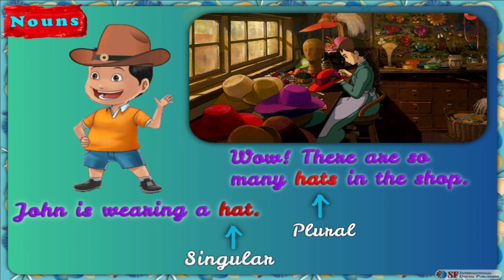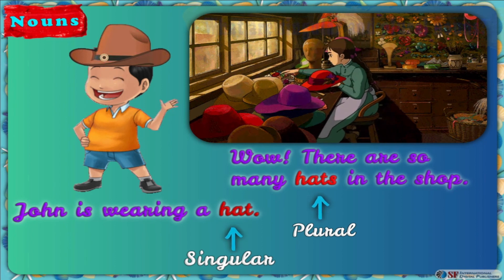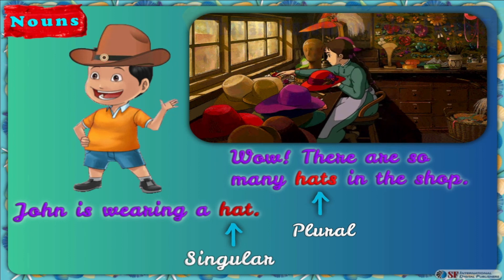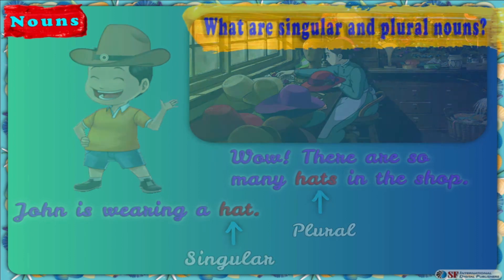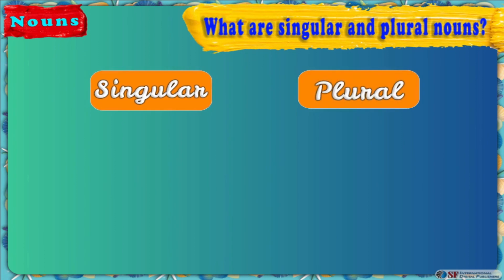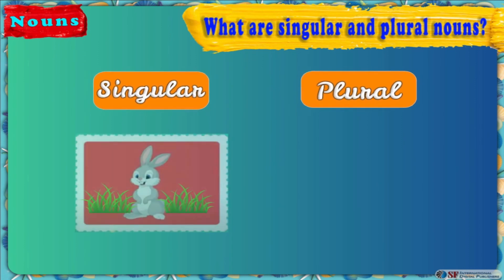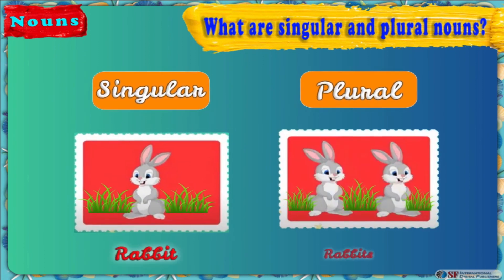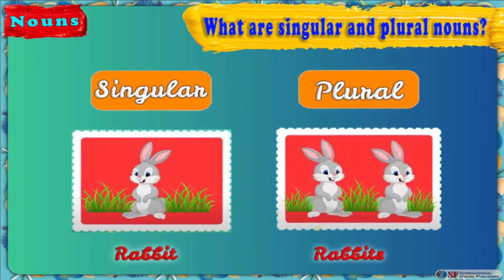You are right, Sam. I think now you can easily do your homework activity. If there is only one rabbit, then it is a singular noun. Whereas if there are two rabbits, then it's a plural noun.